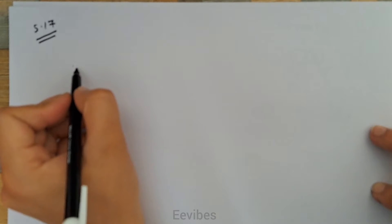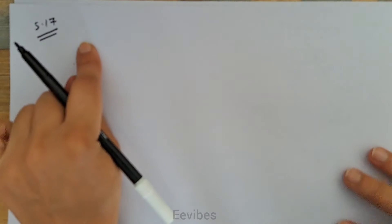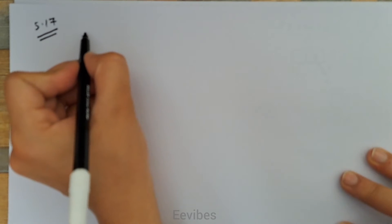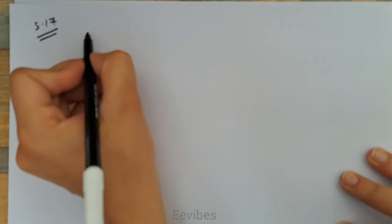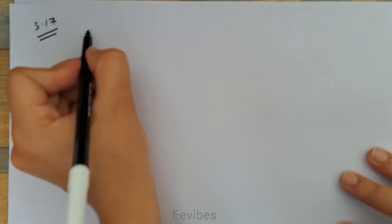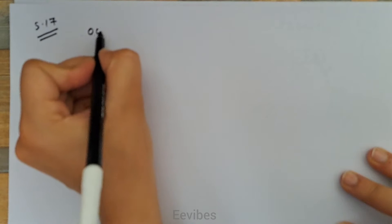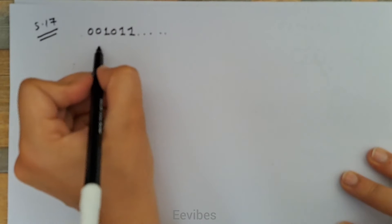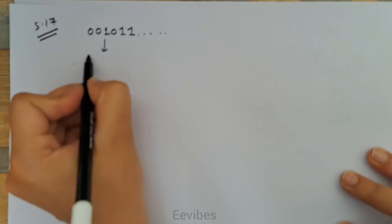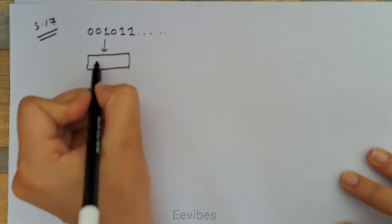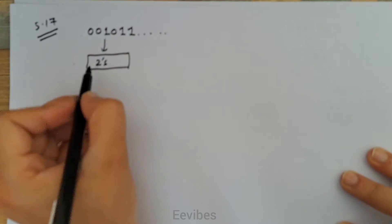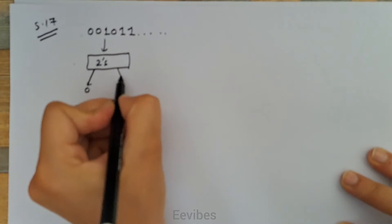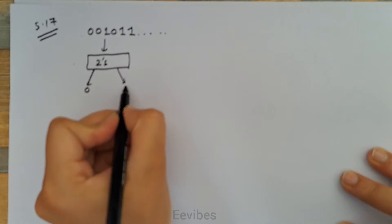Hi everyone, this is Asma Mushtaq from the Double E Vibes. In this tutorial we are going to solve problem 5.17, where we have to implement a one-bit two's complementor. Assuming that you have the sequential input which consists of the binary combination zero, zero, one, zero, one, one and so on. When input is equal to zero, output should be equal to zero, and when input is equal to one, the output is equal to one.